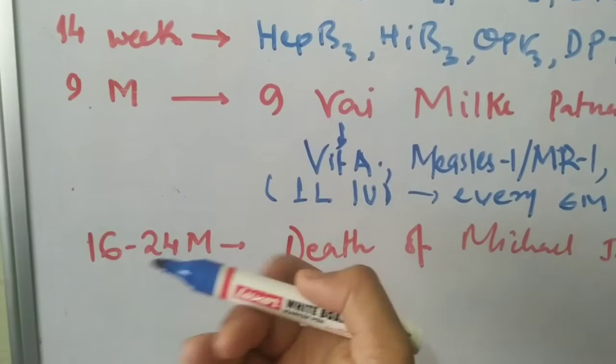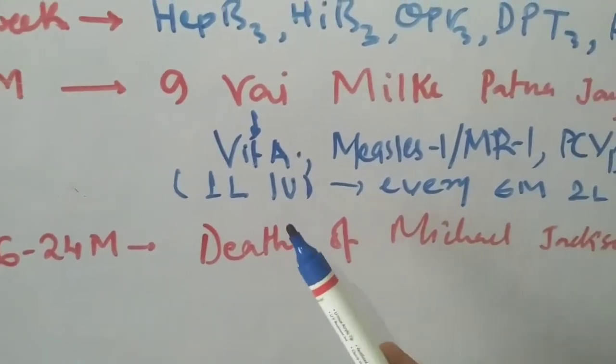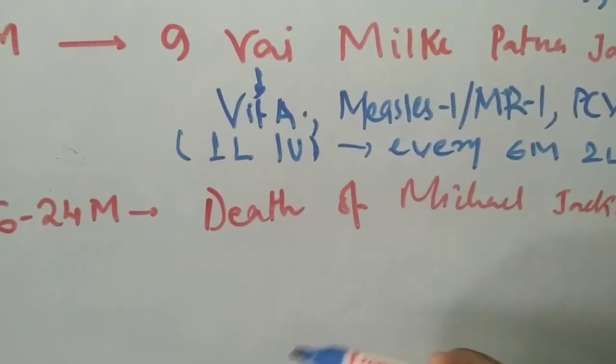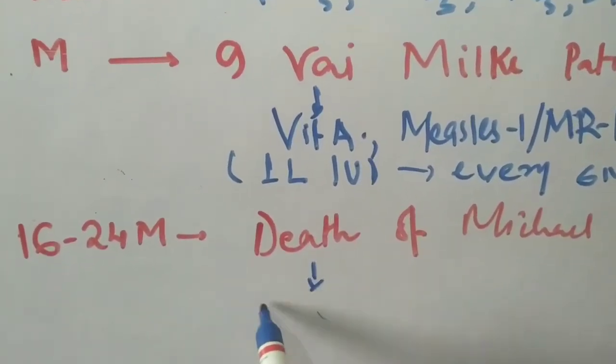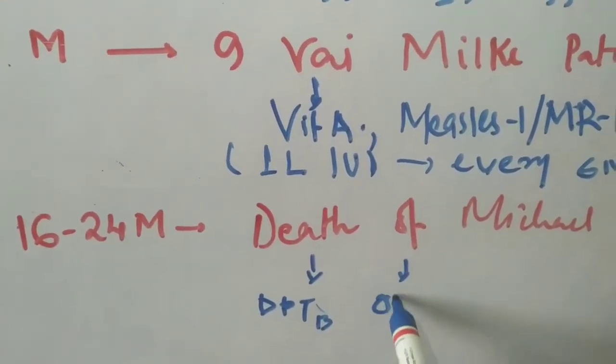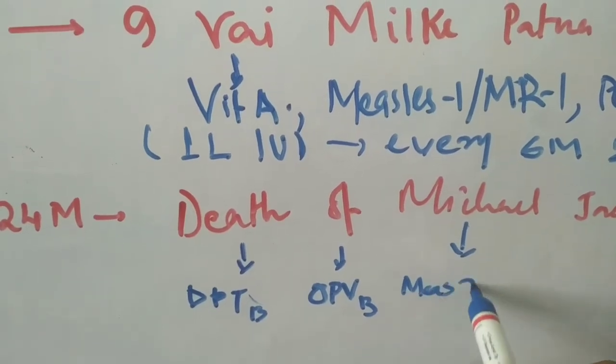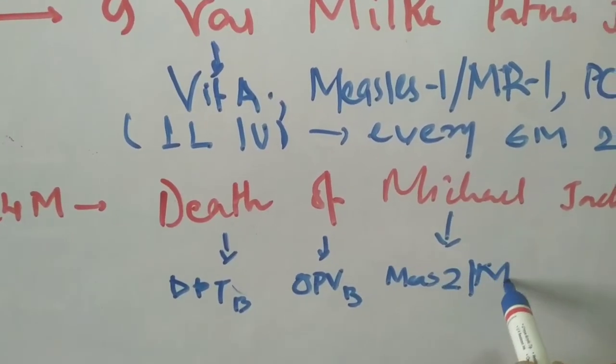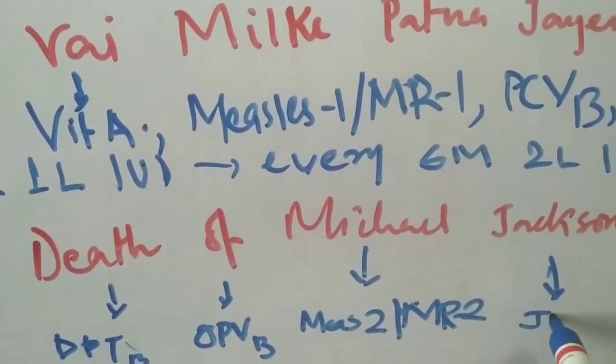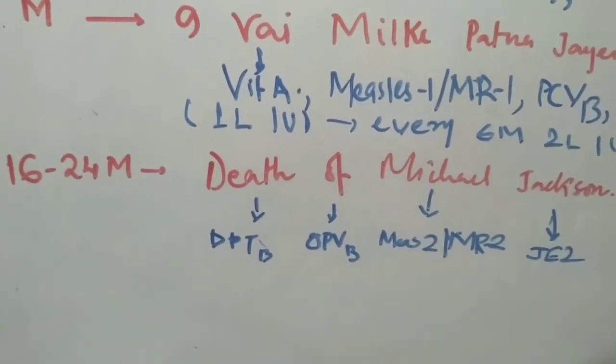At 16 to 24 months, the vaccine is given and their mnemonic is Death of Michael Jackson. Death stands for DPT booster dose, O stands for OPV booster dose, Michael stands for Measles 2 or MR (measles rubella) 2, and Jackson is JE2. So it was 16 to 24 months the vaccine was given in National Immunization Schedule.